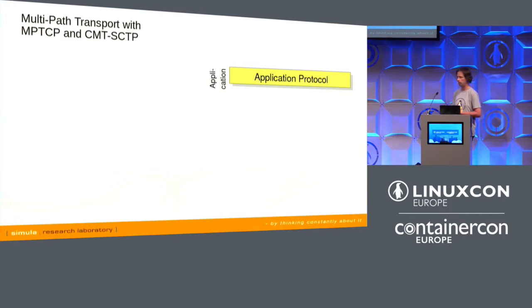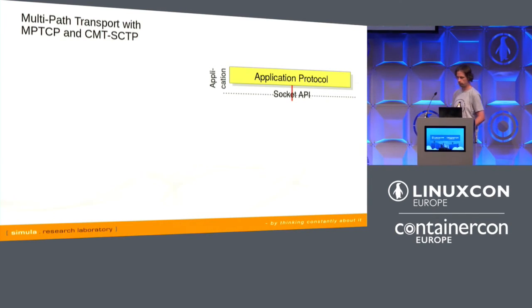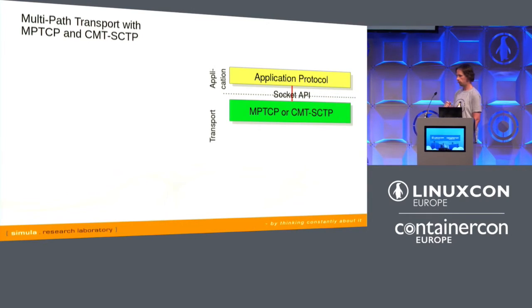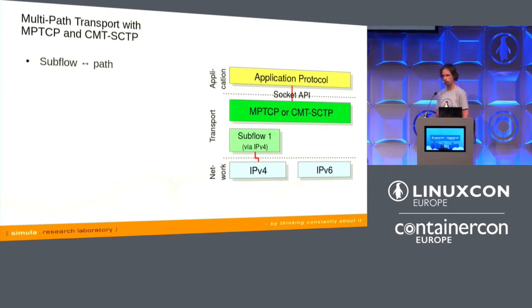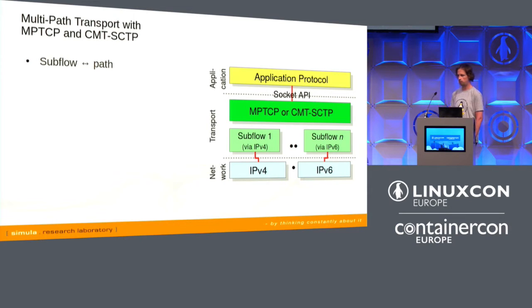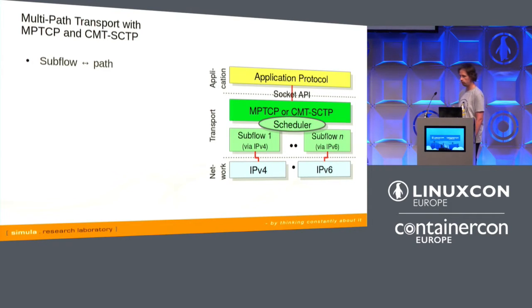Let me briefly introduce how multi-path transport works with MPTCP or CMT-SCTP. An application uses a transport protocol capable of multi-path transport — either MPTCP or CMT-SCTP — with IPv4 and IPv6 as dual-stack below. We need paths, called subflows in MPTCP terminology. These subflows can go over IPv4 or IPv6; within the same transport connection you can even mix IPv4 and IPv6 paths. There's also a scheduler instance to distribute data onto all possible subflows.